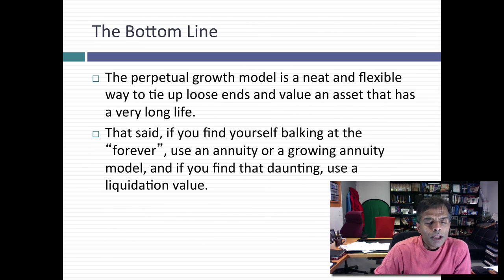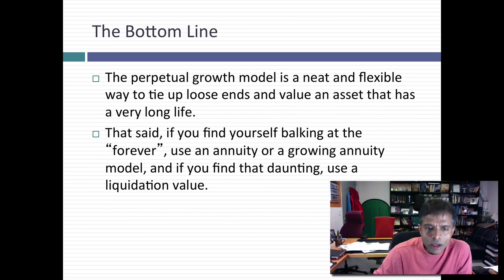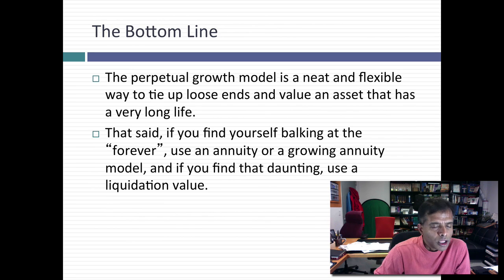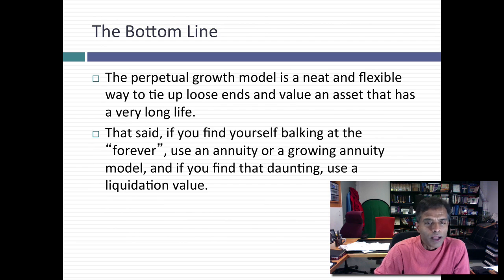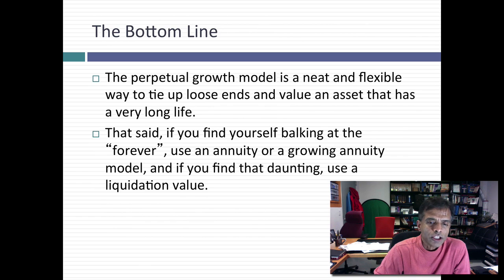So what's the bottom line? It is true that in traditional DCF models, the terminal value comes from using a perpetual growth model. But it's not true you're stuck with it. If you want to use an annuity, go for it. If you want to use a growing annuity, that's fine. If you want to use a liquidation value, I can live with that. The one thing you cannot do is apply a pricing to get that terminal value and call it a discounted cash flow valuation. I hope this helped you. Thank you very much for listening.